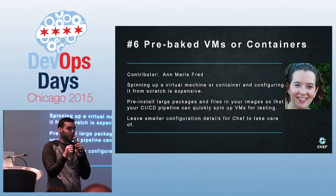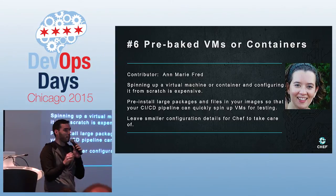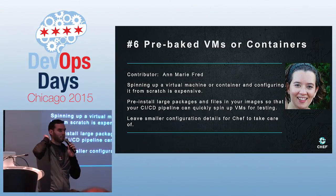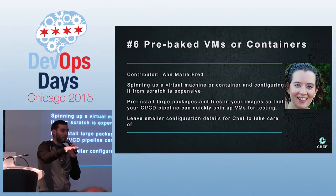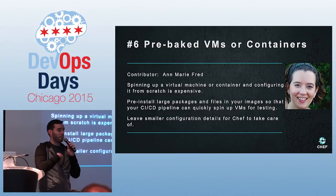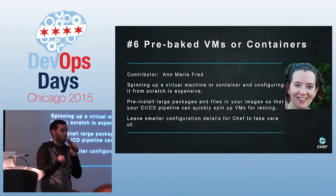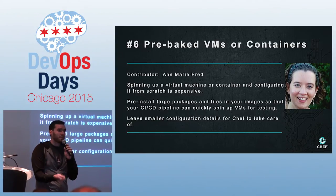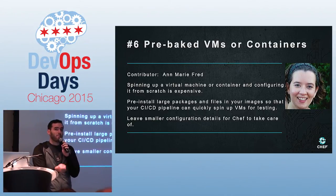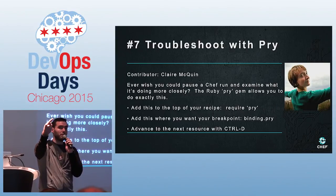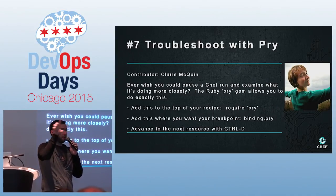Pre-baked VMs or containers: rather than spinning up a cloud instance and installing everything from scratch, create an image that has all of the heavy lifting already done — all the binaries downloaded, all the things installed, all those time-consuming bits — and just do them ahead of time. Then start it up and run Chef again when you want to launch it for real, and just do that last mile configuration.